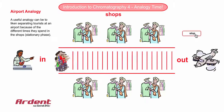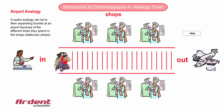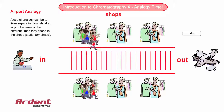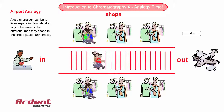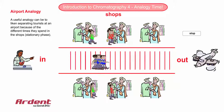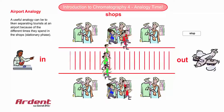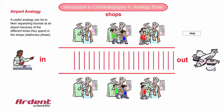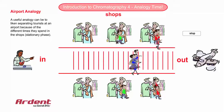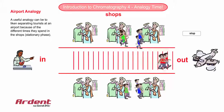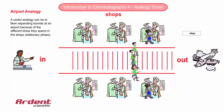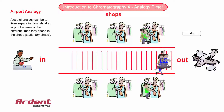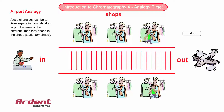A useful analogy to describe chromatography is to think of three groups of tourists arriving at an airport. In this case we have red, blue and green tourists. There happens to be seven red, nine blue and five green tourists. As everyone proceeds through the security checkpoint, the three groups are clustered together. There has been no separation yet.